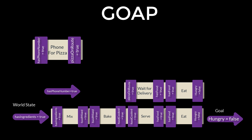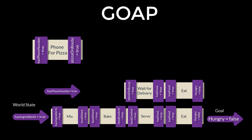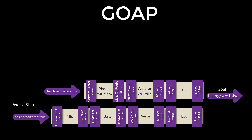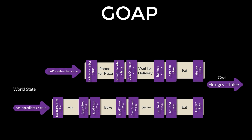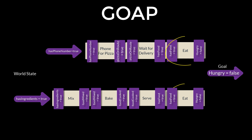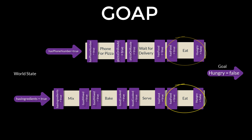In this example there are two possible plans available: order a pizza and bake something to eat. Notice the reuse of the eat action — it fits into both plans and illustrates how actions can be mixed and matched to form different plans. As long as the preconditions and effects fit together any actions can be chained together.